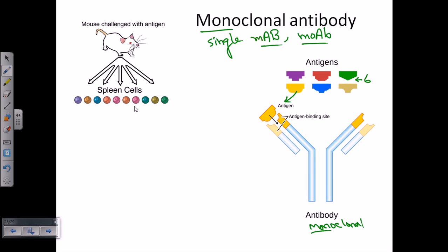As you can see, different coloration is depicting different types of immune cells. The spleen cells are there. After that, what we do here is fuse the spleen cells with myeloma cells. So let's say these are the myeloma cells. Let's draw the other cells.